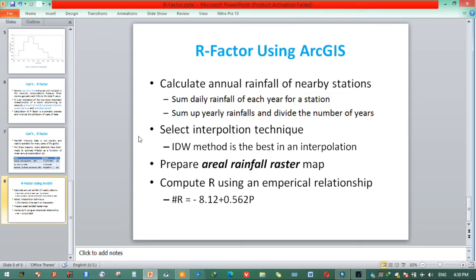The first is sum up daily rainfall of each year for a station. We need to prepare this yearly rainfall data, which is obtained by summing up 365 days rainfall. Total yearly rainfall. The second one is summing up those yearly total rainfalls and divide those total rainfalls of each year by total numbers of years. We will do for each station likewise.